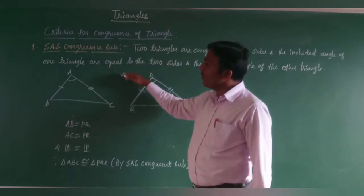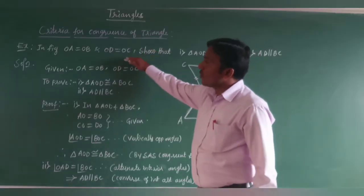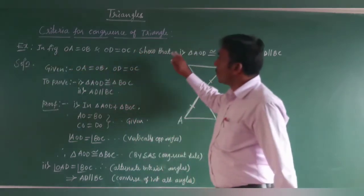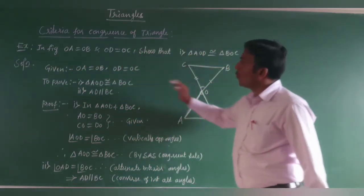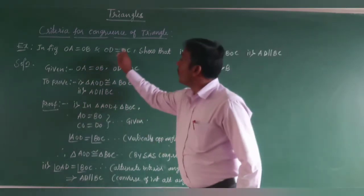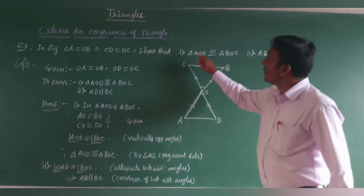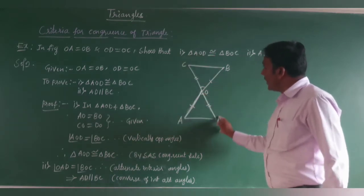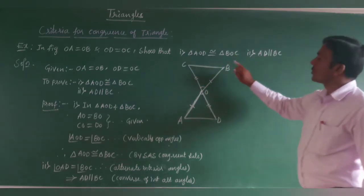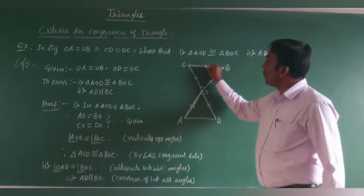Now I will take one example based on the SAS rule. In the figure, OA = OB and OD = OC. We need to prove: first, triangle AOD is congruent to triangle BOC; and second, AD is parallel to BC.